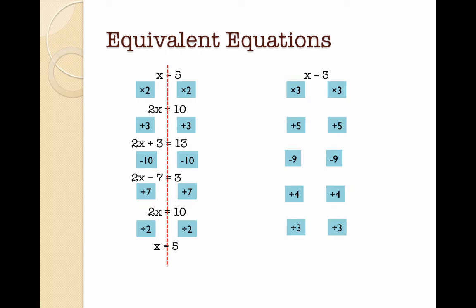We're going to start off by multiplying by 3 on both sides. 3 times x is just 3x, and 3 times 3 is 9, so I have an equivalent equation: 3x equals 9. Now I'm going to add 5 to both sides. You can't add 3x and 5 together because they're unlike terms, so my left hand side is 3x plus 5. On the right hand side, 9 plus 5 is 14, so my equivalent equation is 3x plus 5 equals 14. Next I subtract 9 from both sides. You can't do 3x take away 9, but 5 take away 9 is minus 4, so on the left hand side I get 3x minus 4, and on the right hand side I get 5.